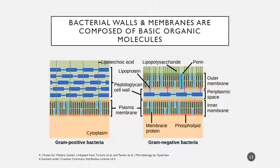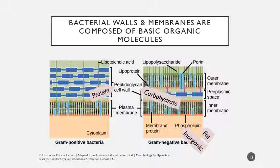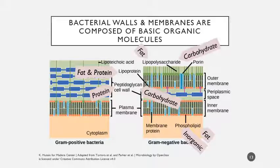Bacterial cell walls and membranes are composed of relatively basic organic molecules in different combinations. Phospholipid cell membranes are made of inorganic phosphate plus lipid. Peptidoglycan cell walls - 'peptido' tells you protein and 'glycan' tells you carbohydrate, so these cell walls are fundamentally made of proteins and carbohydrates. Lipoprotein is a fat and a protein. Lipopolysaccharide - 'lipo' means fat, 'poly' means many, 'saccharide' means sugar - so it's a fat and a carbohydrate. All of these important structures fundamentally come down to different arrangements of these basic organic molecules.